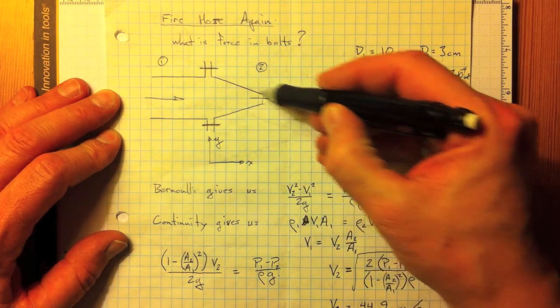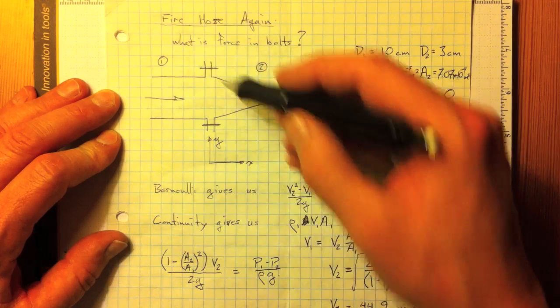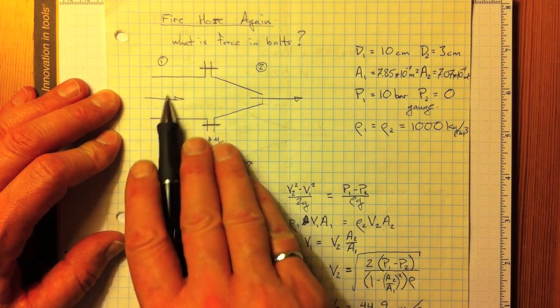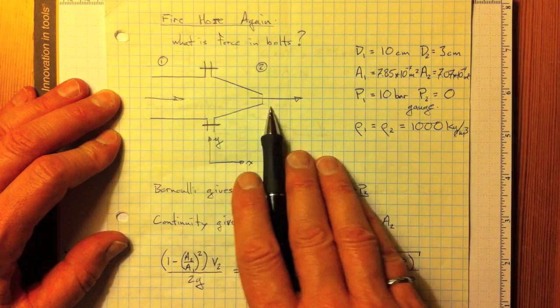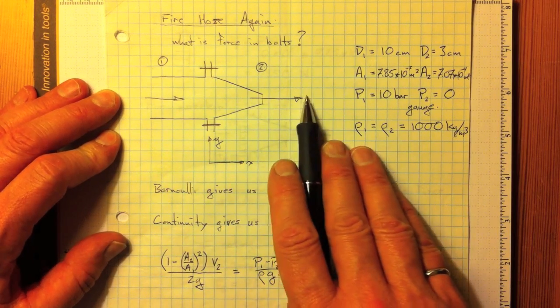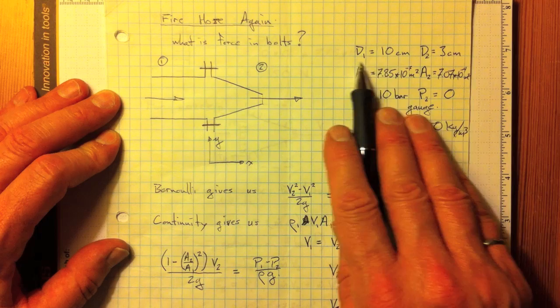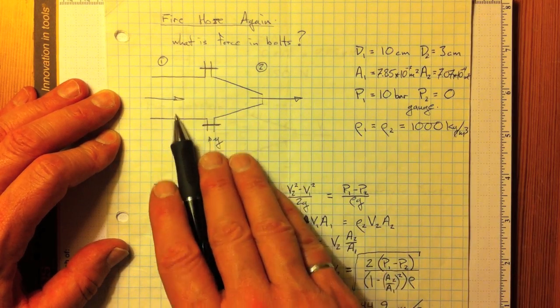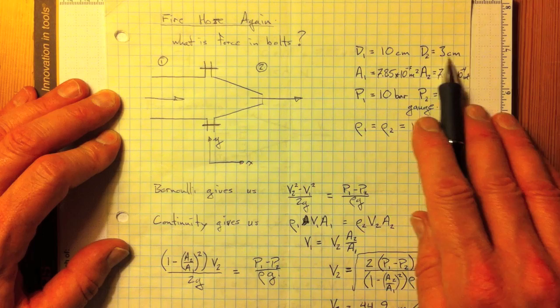If we look at a converging nozzle bolted onto a fire hose or a pipe, then the pressure here will be higher than atmospheric pressure, driving the flow to accelerate through the nozzle and out through the end here to location 2. So in this example, the diameter of the pipe or the hose is 10 centimeters, the diameter of the nozzle exit is 3 centimeters.